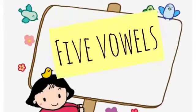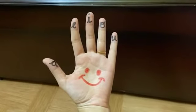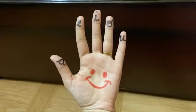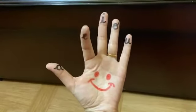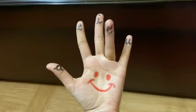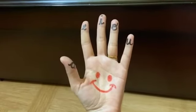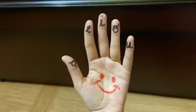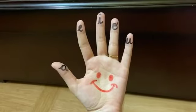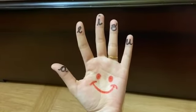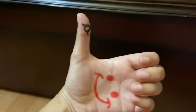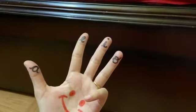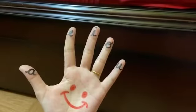Now let's learn the five vowels. Children, how many vowels are there? There are five vowels. The vowels are: A, E, I, O, U. Now repeat after me — A, E, I, O, U. Five vowels.